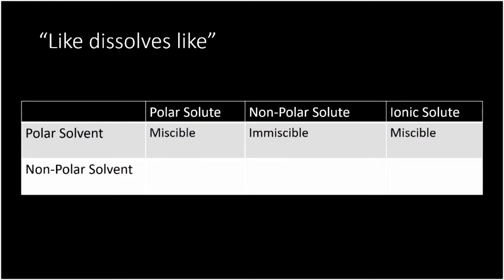Returning to our table: polar plus polar makes miscible; polar plus nonpolar makes immiscible; ionic solute in a polar solvent makes miscible. What about a nonpolar solvent? Nonpolar plus polar — those aren't the same, so that's immiscible. Nonpolar plus nonpolar — like mixing gasoline and oil, both nonpolar — because neither has charges, those are miscible. And if you try to mix a nonpolar solvent with an ionic solute, that won't make a nice solution because ionic compounds are charged and nonpolar solvents are not, so they don't dissolve — they're not miscible.